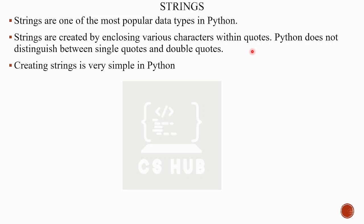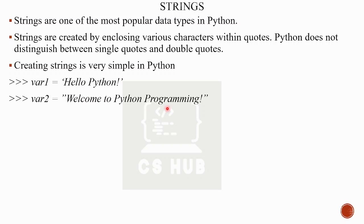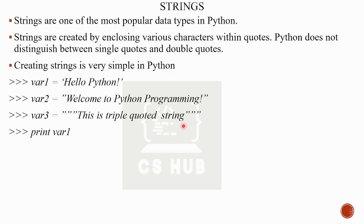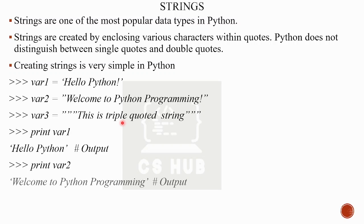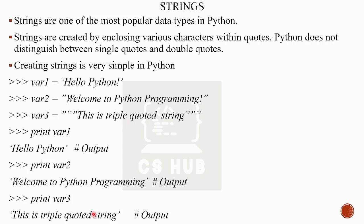Creating a string is very simple in Python. var1 is equal to 'hello python'. You can use single quotes, double quotes, or triple quotes. For example, var2 with double quotes, or triple quotes for string 2. We can print var2 — 'Welcome to Python programming'. Triple quotes allow strings to span multiple lines.